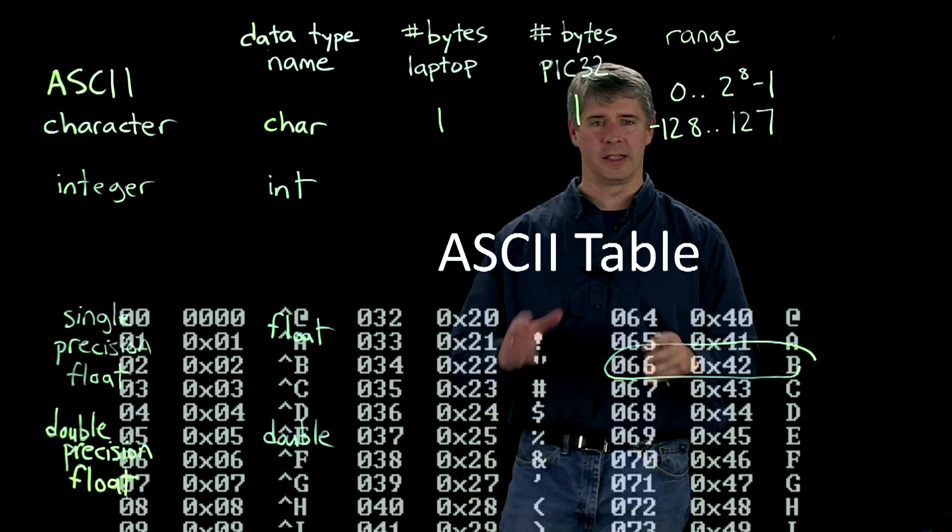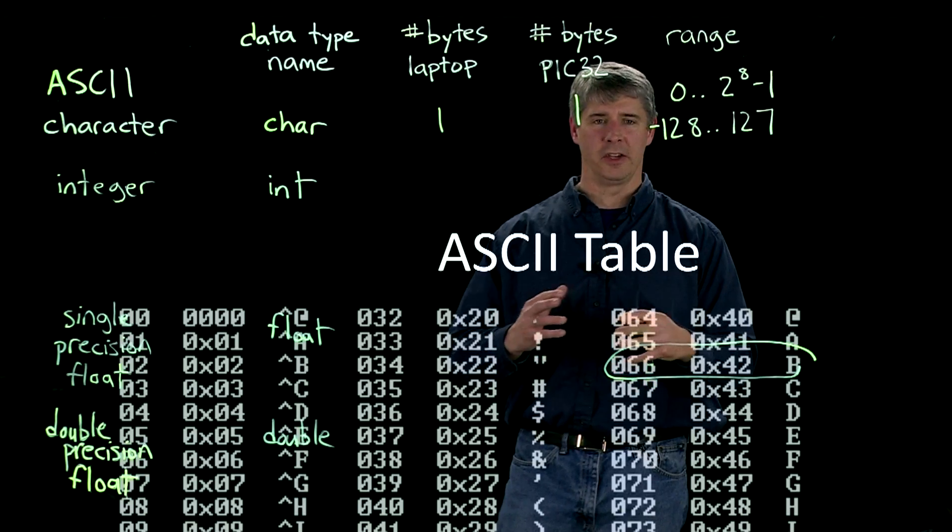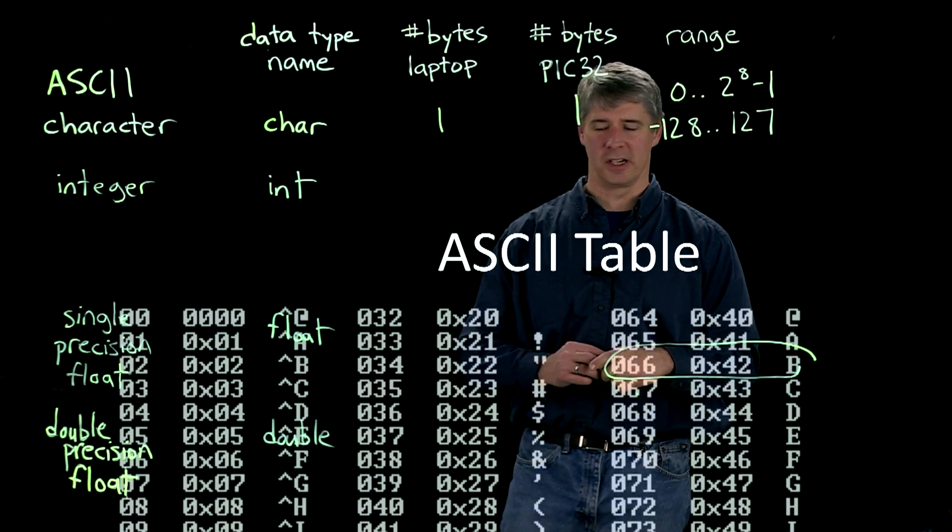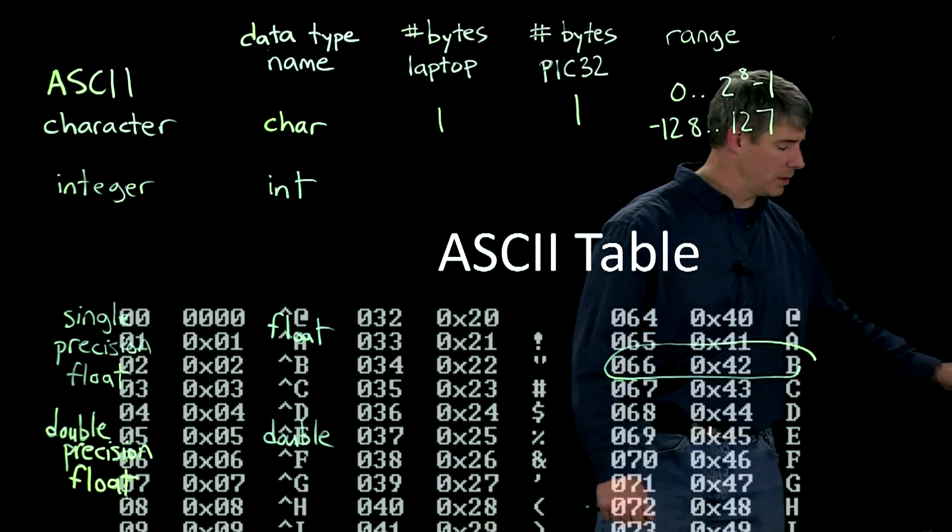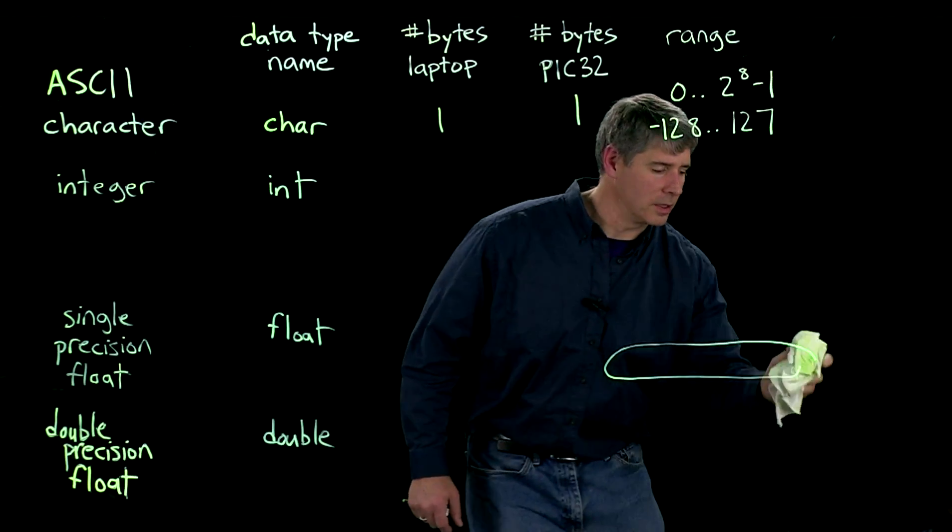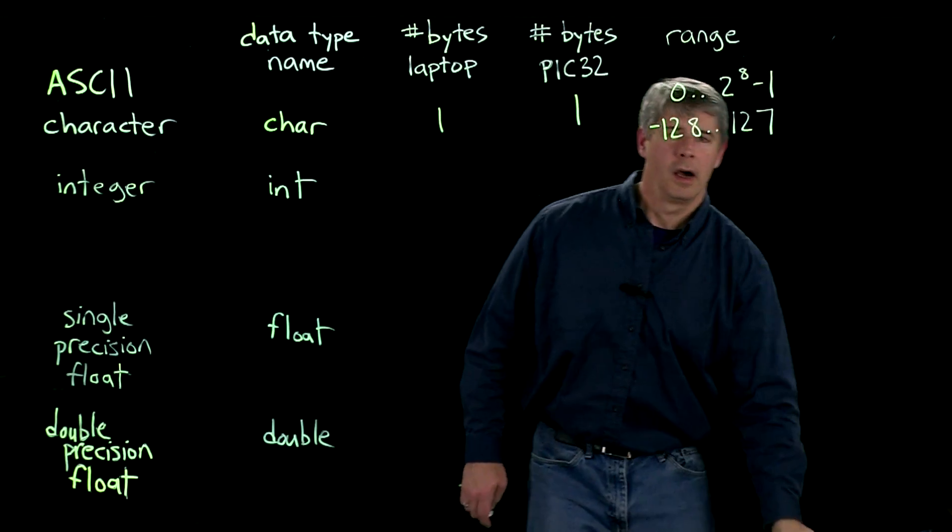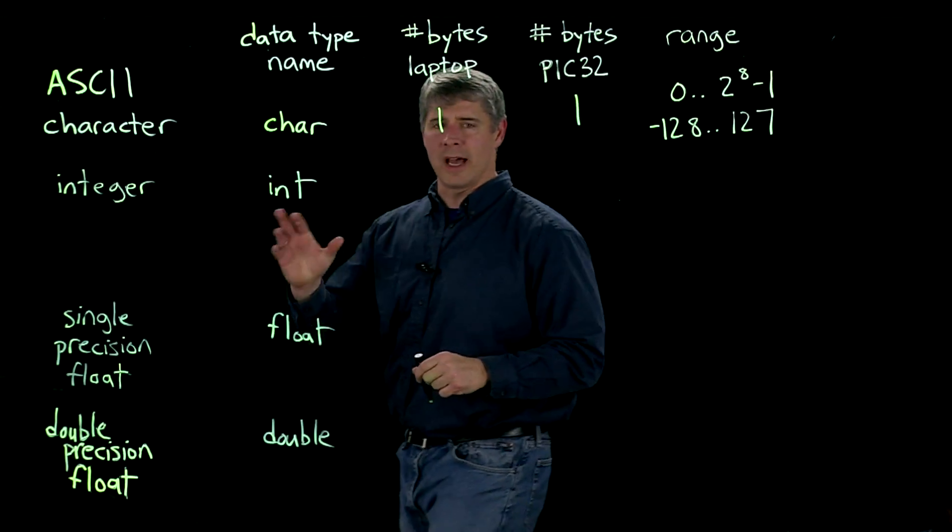And 0x is the common way to indicate on a computer that you're going to use hexadecimal in this representation, not base 10. Okay. So, let me get rid of that. Okay. So, that's ASCII characters.